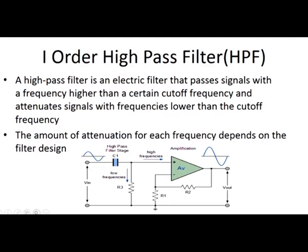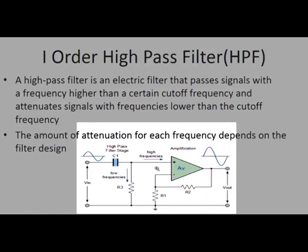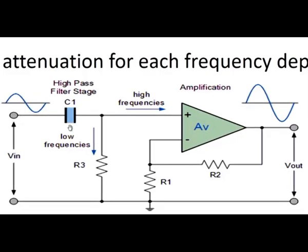We have seen the low pass filter in the previous lecture. The difference between the low pass and the high pass filter in the circuit is that the resistor and the capacitor are interchanged, and the voltage across the resistor is the input of the amplifier. The amplifier is used as a non-inverting amplifier; the feedback resistor is R2, the input resistor is R1, and the gain is 1 plus R2 by R1.